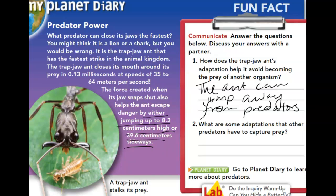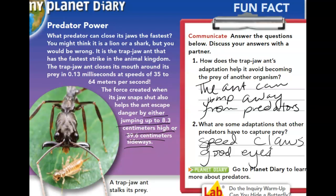Question two asks what adaptations other predators have to capture prey. These can include, but are not limited to: speed, claws, good eyesight — being able to see super well, sometimes even at night — having sharp teeth, and being able to blend into the background. All those and more.